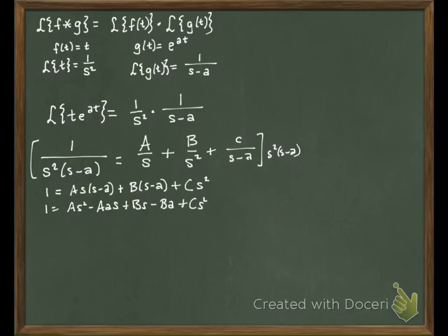So let's write our equations over here. What do we have with S squared? A plus C. Is there an S squared on the left side? No, so what does that have to equal? Zero.